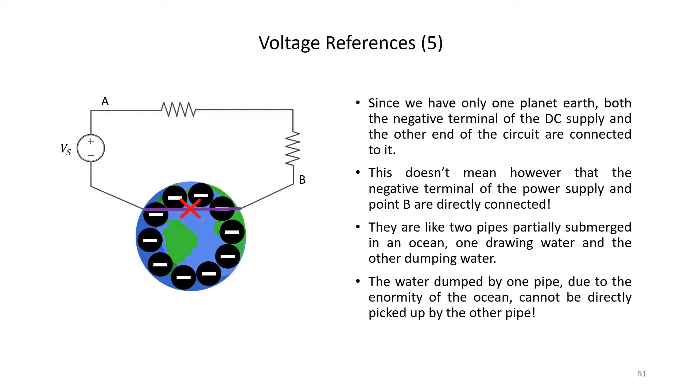They are like two pipes which are partially submerged in an ocean, one which is drawing water and the other one which is dumping water. So the water that is dumped by one pipe, due to the enormity of the ocean, cannot be directly picked up by the other pipe.